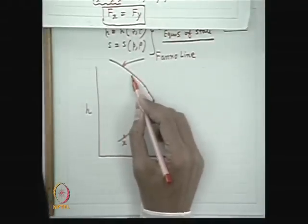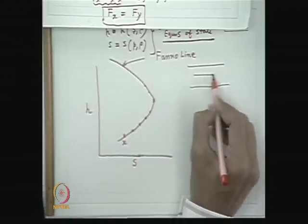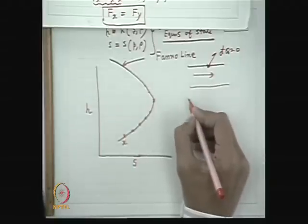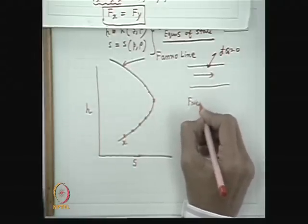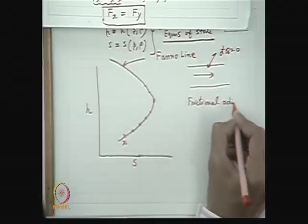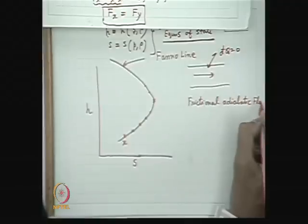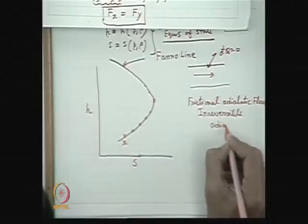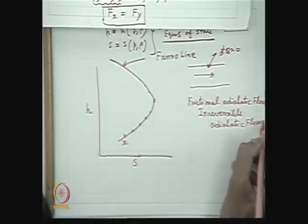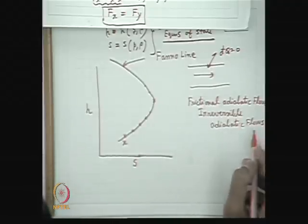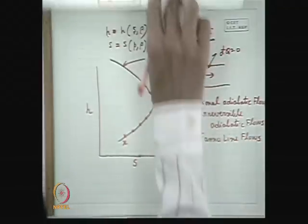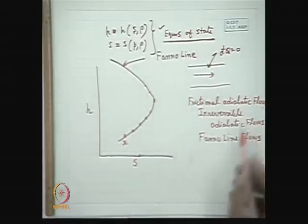These flows are irreversible with friction, but no heat transfer. They are known as Fanno line flows. The state points of these flows lie on this curve. So frictional adiabatic flows — that is, irreversible adiabatic flows — are flows with constant stagnation enthalpy, and their enthalpy and entropy change along this Fanno line.